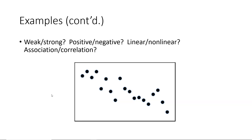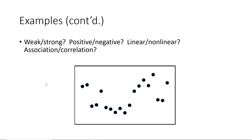Moving on to the third scatterplot example, we would probably say the relationship is somewhat strong. We would definitely say it is negative — the pattern of the dots is going downward from left to right. We would say it's somewhat linear, possibly bordering on a little bit nonlinear, and in this case we would say there is a correlation because the pattern is somewhat linear — we pick correlation as opposed to association. In the fourth and final scatterplot example, we would probably characterize the relationship as weak. It's difficult to determine if it's positive or negative. It is nonlinear, and we would say there is only an association because of the nonlinearity of the pattern formed by the dots.